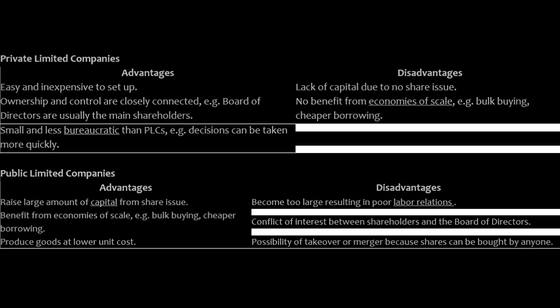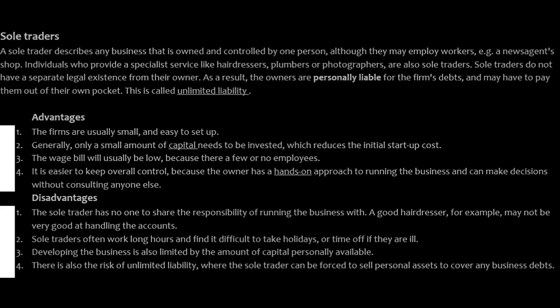Conflict of interest between shareholders and the board of directors is called agency cost. This is why managers are hired — it's a very large topic covered at higher levels. Also, shares of a public limited company can be bought by anyone, so a takeover or merger is possible. These are called M&A transactions — merger and acquisition — and large sums are paid to those involved, which you'll study in CA, CFA, or other accounting qualifications.